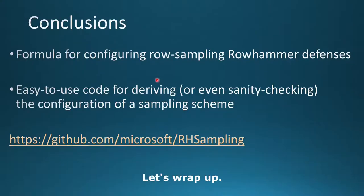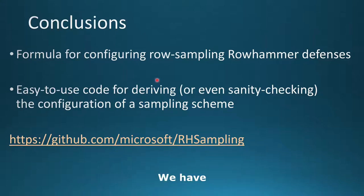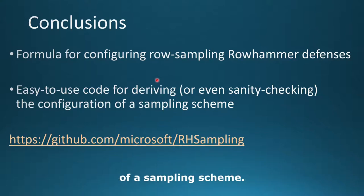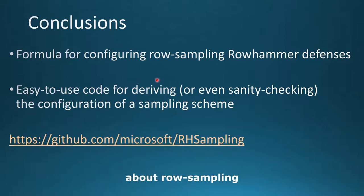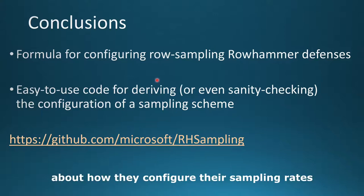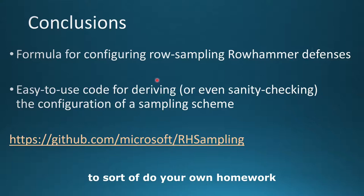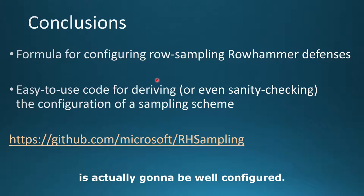To wrap up: in our work we put forward a formula for configuring row sampling row hammer defenses. We have put together a script that is easy to use for deriving or sanity checking the configuration of a sampling scheme. Our goal was to encourage everyone developing hardware and thinking about row sampling to be judicious and careful about how they configure their sampling rates. We've done our best to make easy-to-use code so you can do your own homework and make sure the system you are building this defense for is actually well configured. Thank you so much. I'm happy to take questions.